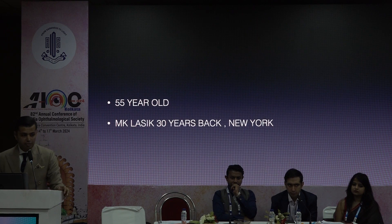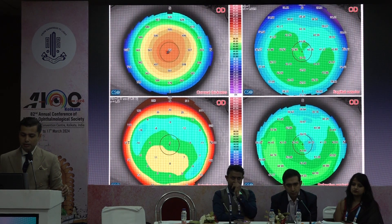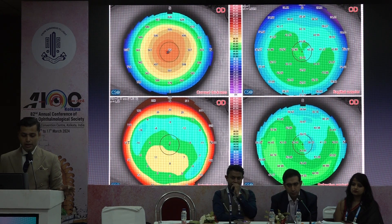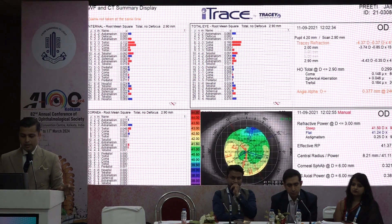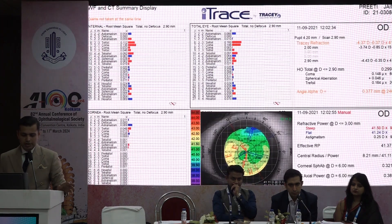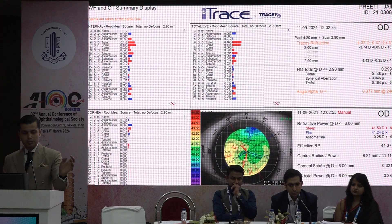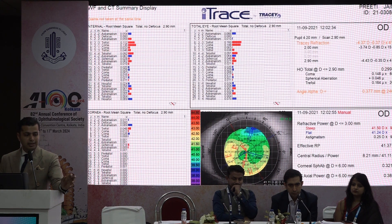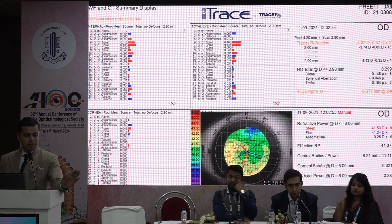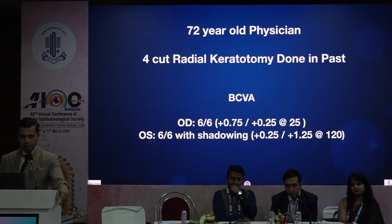Case 4: a 55-year-old with a microkeratome LASIK done many years prior. The corneal profile was not bad. Aberrometry showed aberrations coming from the cataract, not the cornea. Topography was regular, and aberrometry clearly demonstrated — on the bottom left — no corneal aberrations at all, making this a very good cornea to proceed with surgery on.